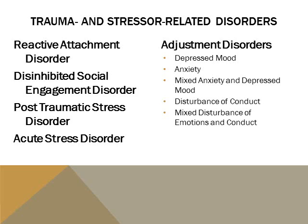Social neglect — that is, the absence of adequate caregiving during childhood — is a diagnostic requirement for both reactive attachment disorder and disinhibited social engagement disorder. Although the two disorders share a common etiology, the former is expressed as an internalizing disorder with depressive symptoms and withdrawn behavior, while the latter is marked by disinhibition and externalizing behavior.